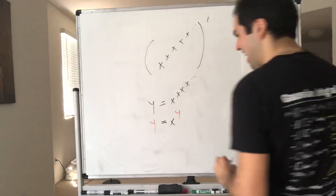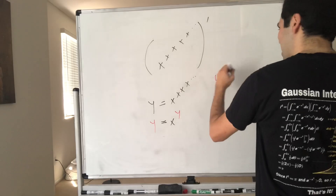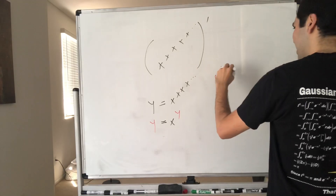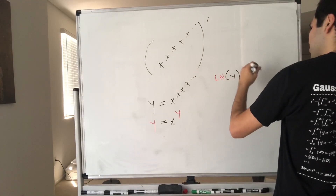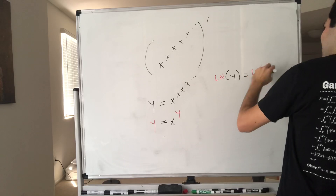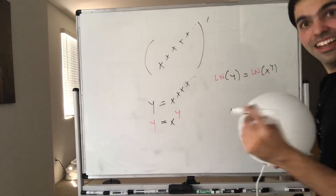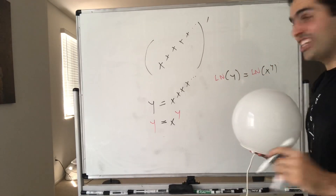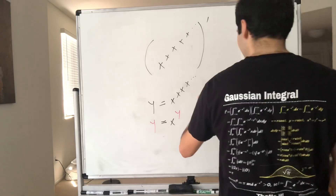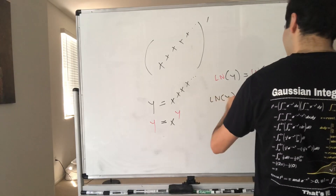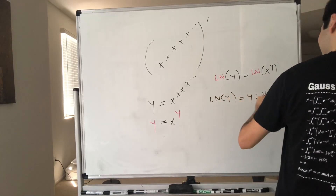And then you want to take ln's on both sides, so ln of y equals ln of x to the y, and then we get ln of y equals y times ln of x.